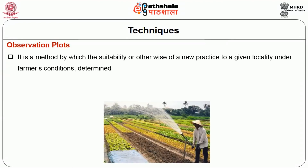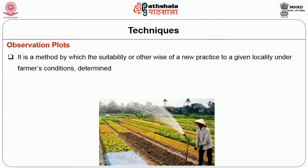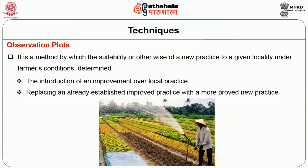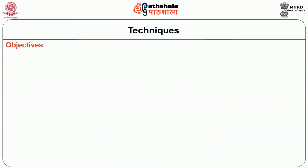An observation plot is a method by which the suitability or worth of a new practice to a given locality under farmers' conditions is determined. A new practice may mean the introduction of an improvement over local practice — for example, replacing cultivation of open-pollinated maize with hybrid maize — or replacing an already established improved practice with a more proven new practice.